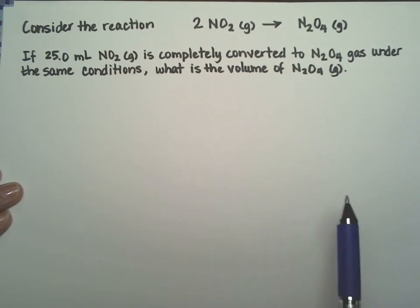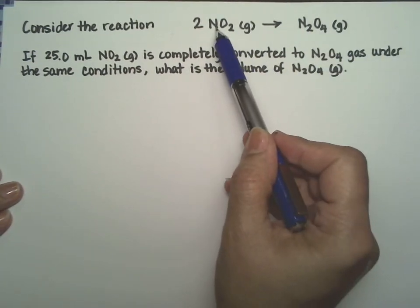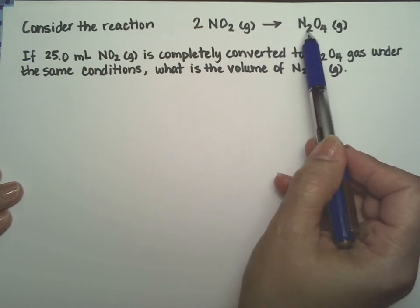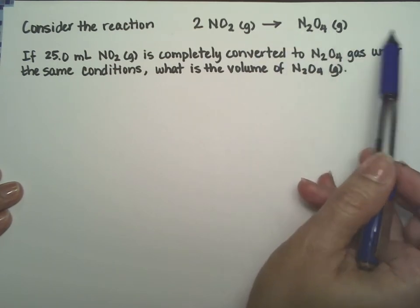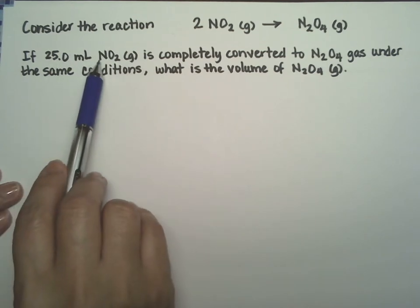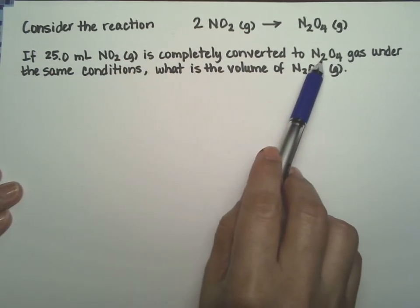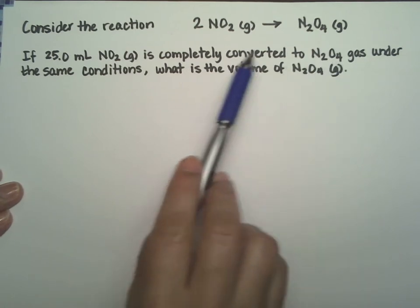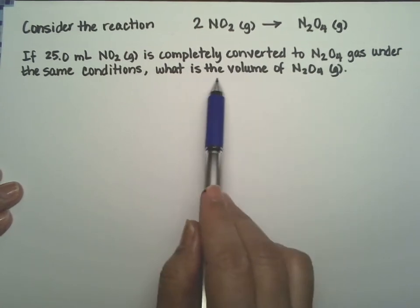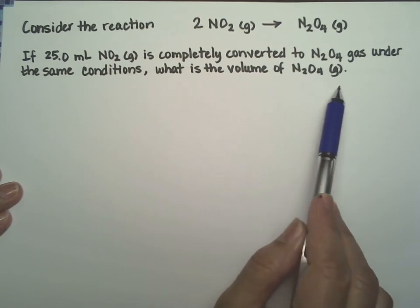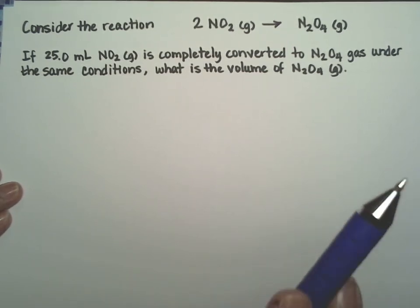Our next problem, we're going to consider the reaction of nitrogen dioxide being converted into nitrogen tetroxide, N2O4. So if 25 milliliters of NO2 is completely converted to the nitrogen tetroxide gas under the same conditions, what is the volume of the product, the N2O4?